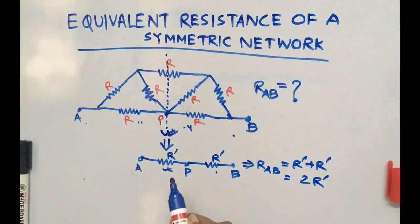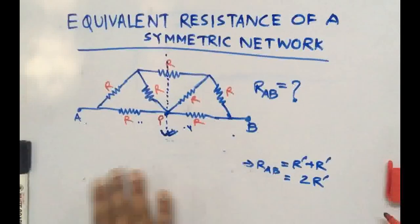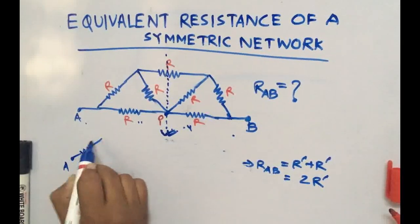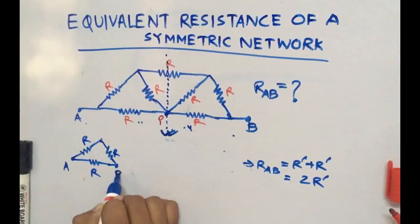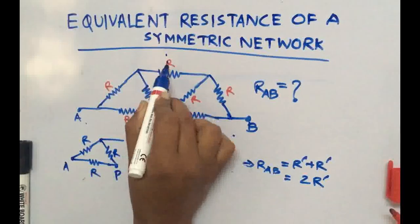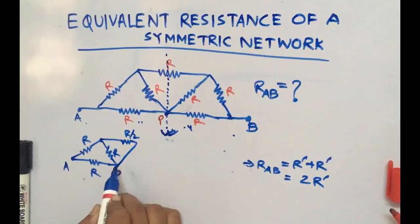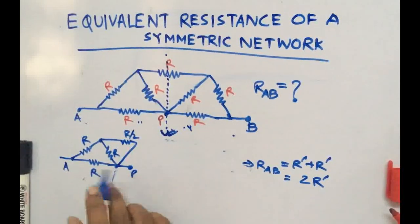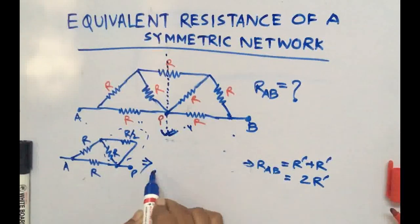So R_AB will be r_dash plus r_dash, equal to 2·r_dash. Our objective is now to find r_dash. If I write the resistance between A and P, this circuit will look like this: we have R, R, R, and R leading to point P. This resistance will divide to R/2 on each side. Now R/2 and R are in parallel, so we can simplify this circuit further.